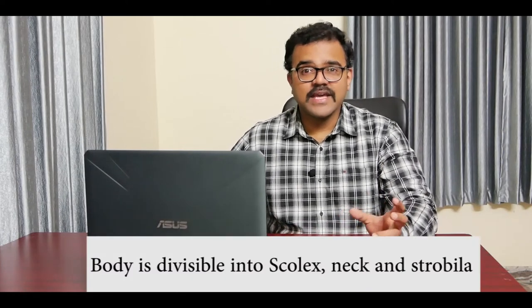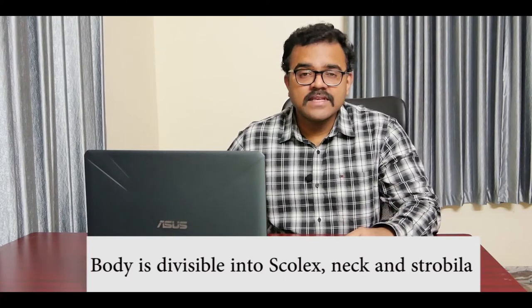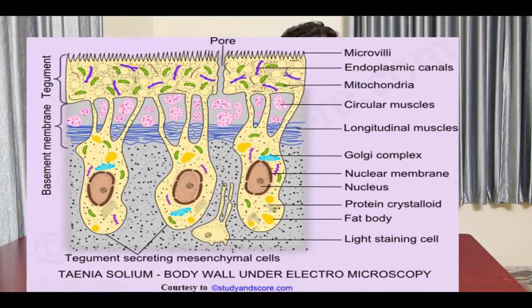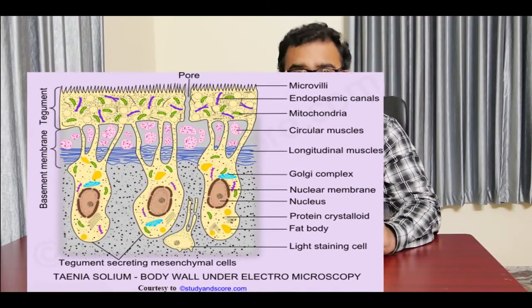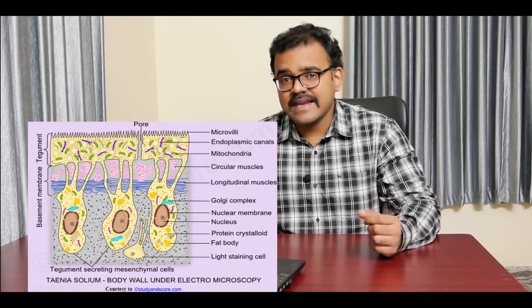The body of cestodes is flattened and ribbon-like, and hence cestodes are commonly called tapeworms. The body is divisible into a scolex, a narrow neck, and a segmented trunk or strobila. The strobila consists of segments called proglottids. The body is covered by a dynamic, metabolically active syncytial layer called the tegument.